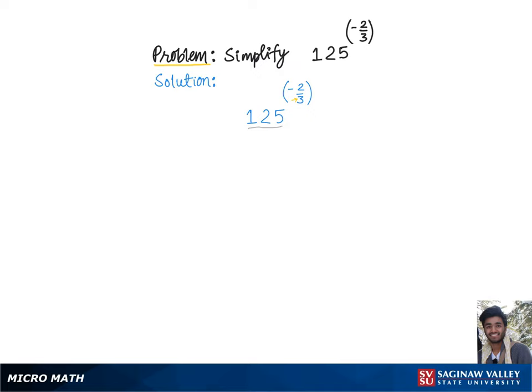We find that number by guess and check method. So we know 125 is 5 cubed.